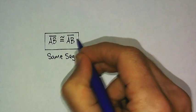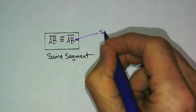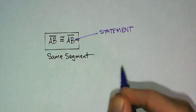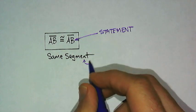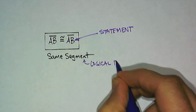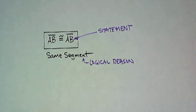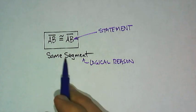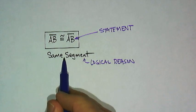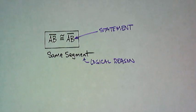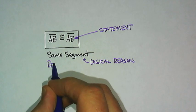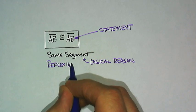We'll keep it to rectangles, one shape. In that rectangle will be our statement, and below the rectangle will be the reason why we know that statement is true—a logical reason. In my example here, I have a box with AB congruent to AB. That's my statement, and the reason I know that is because we're talking about the same segment.